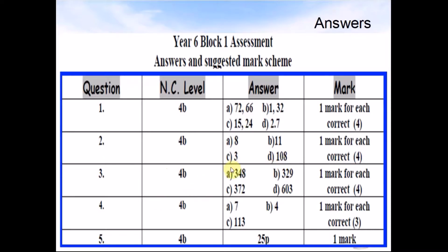Question 3: A was 348. B was 329. D was 372. D was 603.